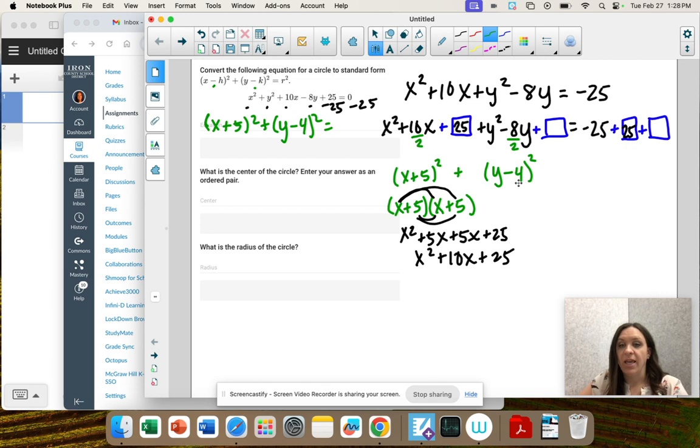So now we can multiply it out like we did down here to get the 25, but there's a shortcut. If you take this number, so 10 divided by 2, 5, and then you square it. So 5 squared is 25.